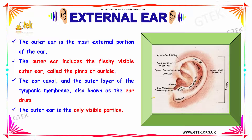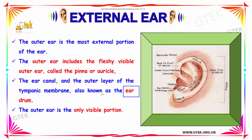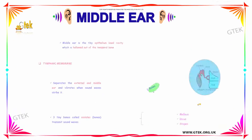The outer ear is the most external portion of the ear. It includes the fleshy visible outer ear known as the pinna or auricle, the ear canal, and the outer layer of the tympanic membrane, commonly known as the eardrum. The vibration produced by the eardrum is transmitted as sound. Your outer ear is the only visible portion of your ear, and this portion is your pinna.